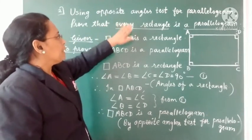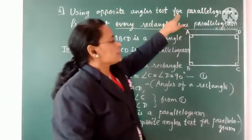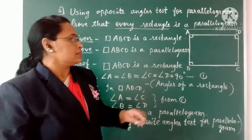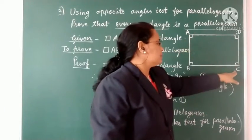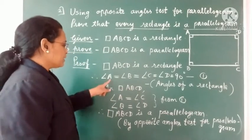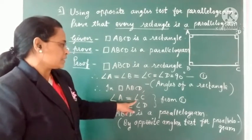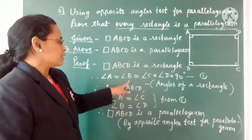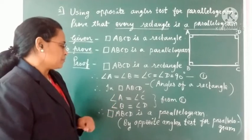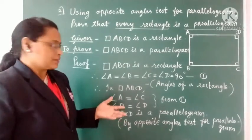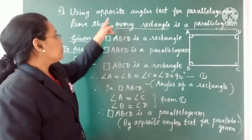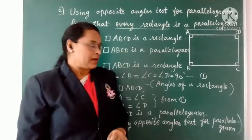Now we can make pairs of opposite angles because we have to prove this by the opposite angle test for parallelogram. The pairs of opposite angles are: angle A and angle C, and angle B and angle D. Both pairs are congruent since each measures 90°. We have made pairs of opposite angles and shown they are congruent using the opposite angle test.